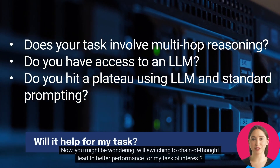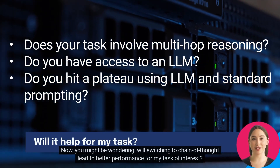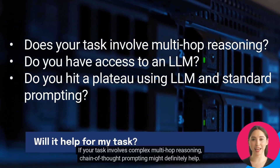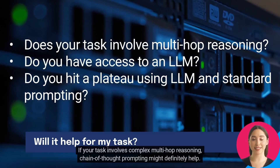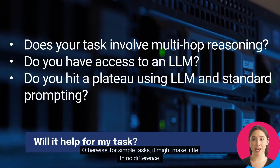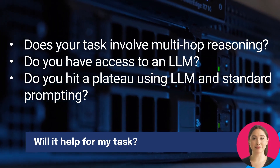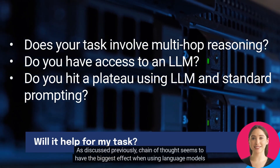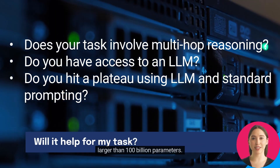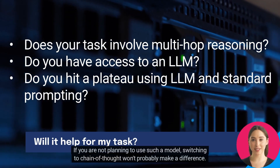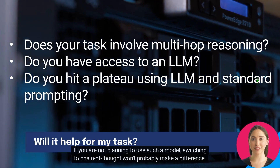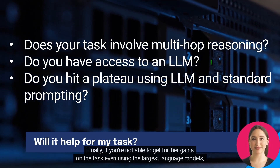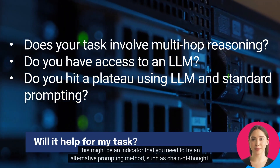You might be wondering: will switching to chain-of-thought lead to better performance for my task of interest? There are several aspects to consider. The first is the complexity of your target task — if your task involves complex multi-hop reasoning, chain-of-thought prompting might definitely help; otherwise, for simple tasks, it might make little to no difference. Second, are you planning to use a large language model? Chain-of-thought seems to have the biggest effect when using language models larger than 100 billion parameters, so if you're not using such a model, switching to chain-of-thought won't probably make a difference. Finally, if you're not able to get further gains on the task even using the largest language models, this might be an indicator that you need to try an alternative prompting method, such as chain-of-thought.